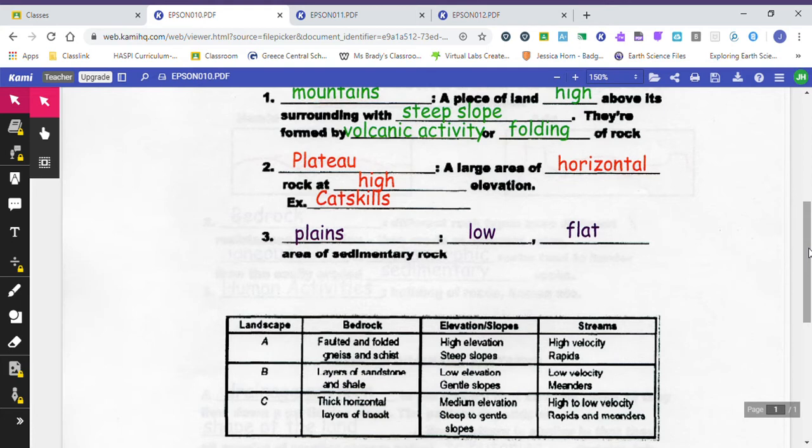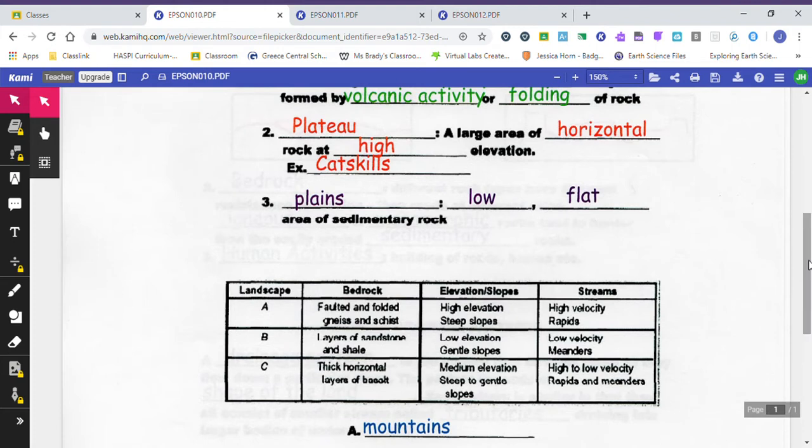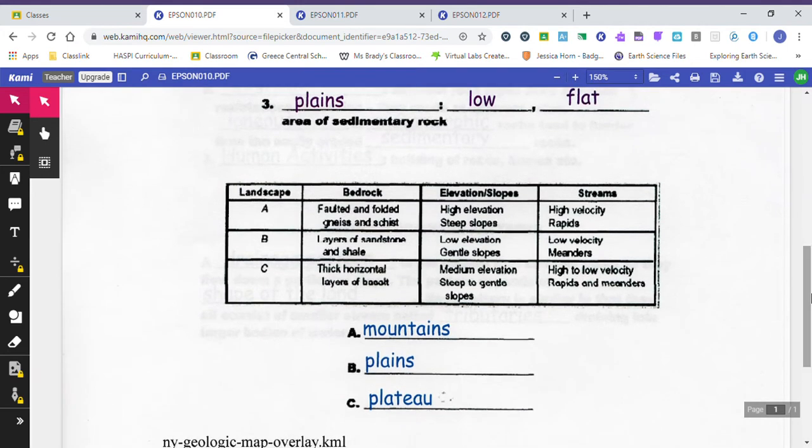The first one says it's made with folded, faulted, and folded gneiss and schist, which are both metamorphic rocks. It says it's a very high elevation and has steep slopes, and the streams run very quickly with high velocity and lots of rapids in the water. Of the three landscapes we have to choose from, that would be our mountains. The big hint there would be the high elevation and the steep slopes. Landscape B is going to be our plains, and then landscape C is going to be the plateau.